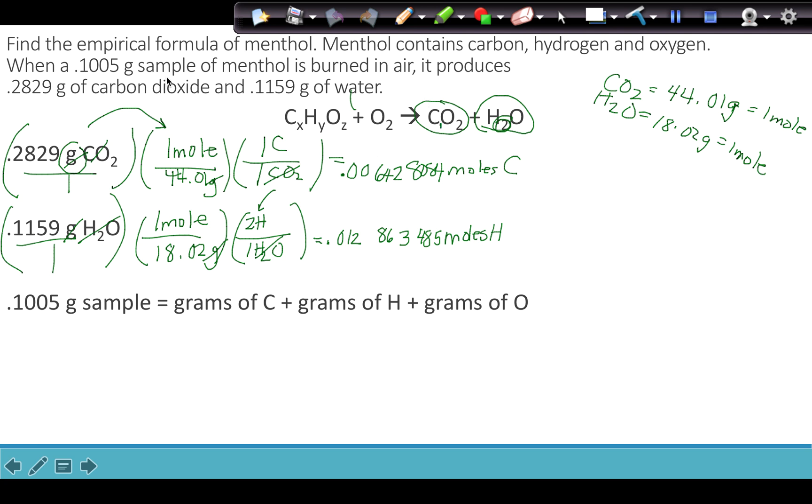But in this compound, we also have oxygen. So now we're going to say, this 0.1005 gram sample is made up of all of my grams of carbon plus all of my grams of hydrogen plus all of my grams of oxygen. And when I put those things together, I'm going to get my 0.1005 gram sample. So I have moles of carbon and I have moles of hydrogen. I need my grams of carbon and my grams of hydrogen so that I can get my grams of oxygen.